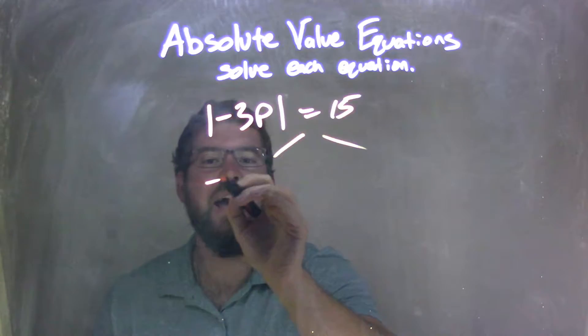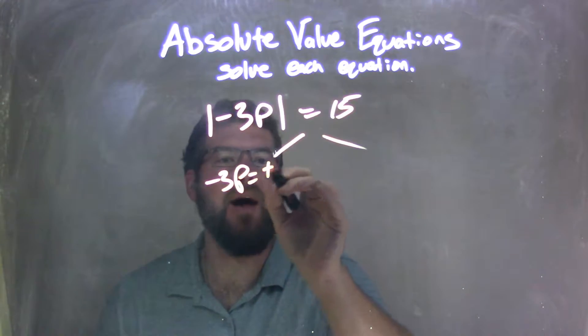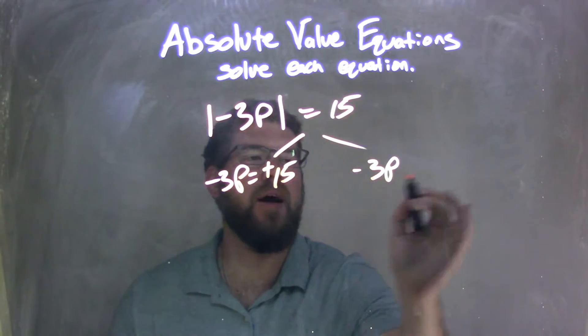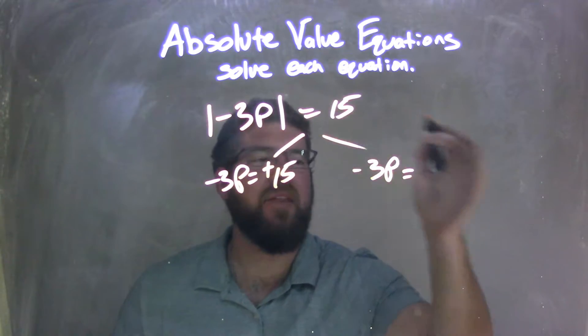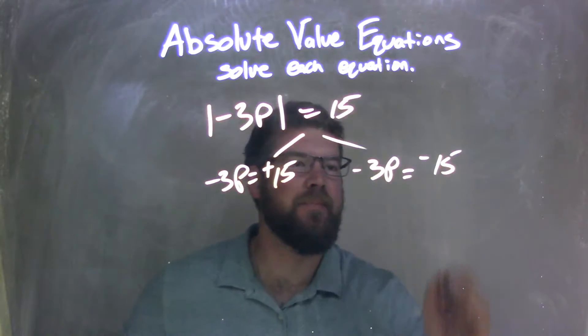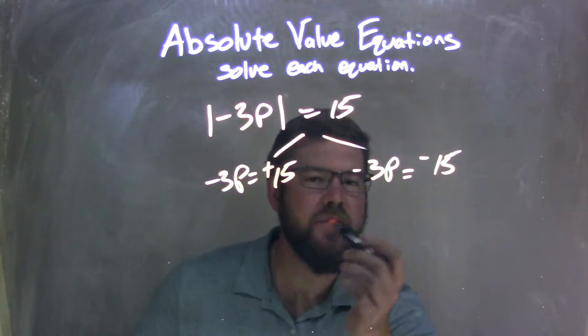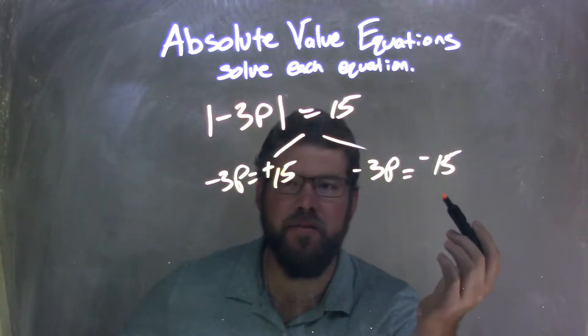We have negative 3p equals positive 15, we take the positive 15, and negative 3p, what's inside the absolute value, equals the negative 15. So, negative 3p equals positive 15, and negative 3p equals negative 15.